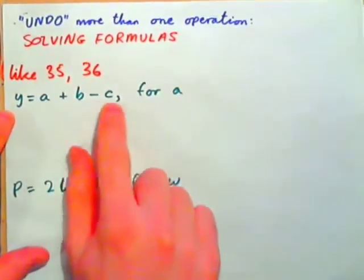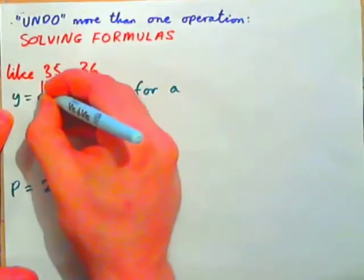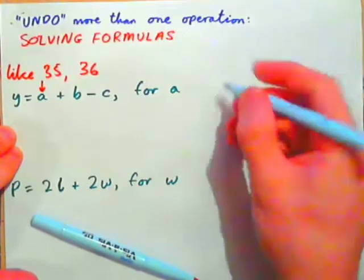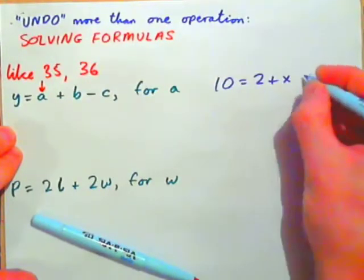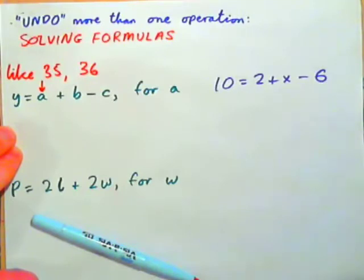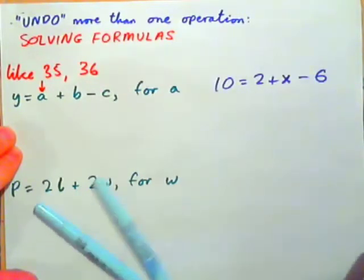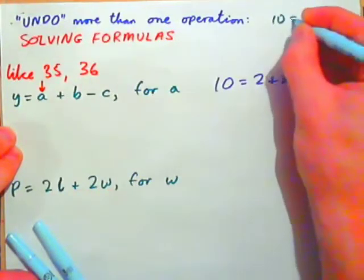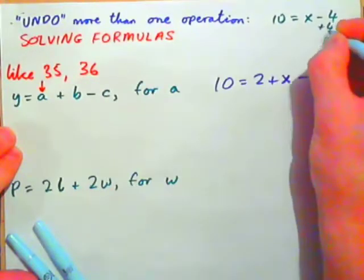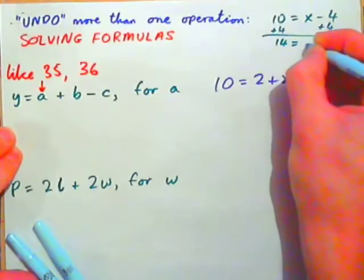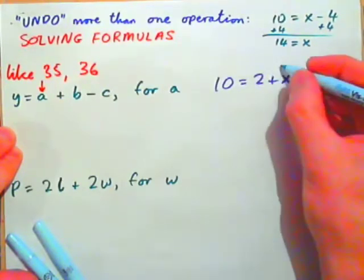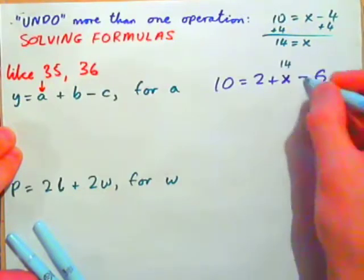Y equals A plus B minus C — solve that for A. First thing, put an arrow on the A; we need A on its own. Let's think of an example with numbers. If we had 10 equals 2 plus X minus 6, we could put 2 and negative 6 together to get negative 4, giving 10 equals X minus 4. Then just add 4 to both sides, and 14 equals X. That works because 2 plus 14 is 16, minus 6 is 10.